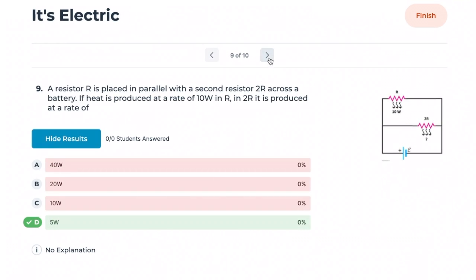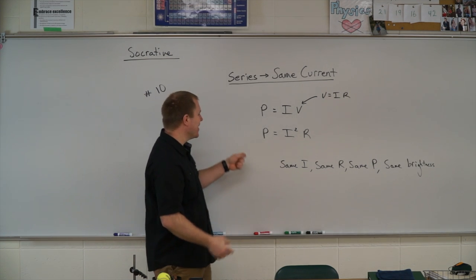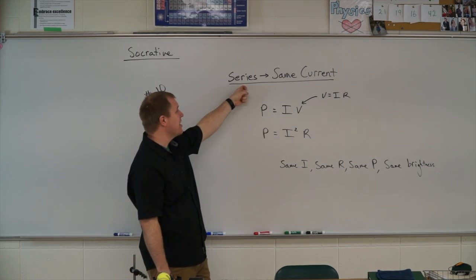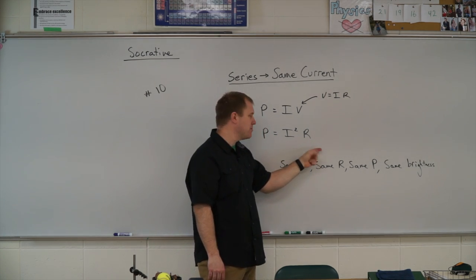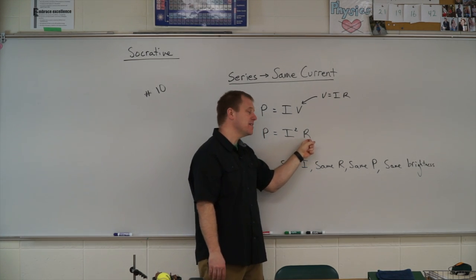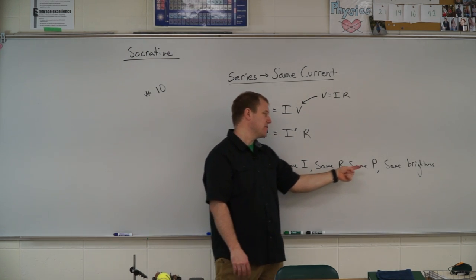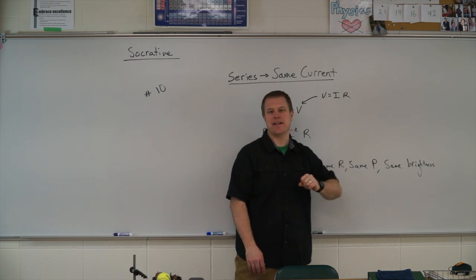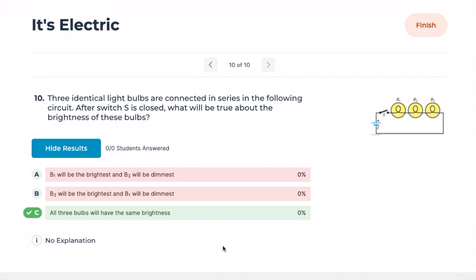Number ten: three identical light bulbs are connected in series. After switch S is closed, what is true about the brightness of the three bulbs? Since they are in series, they carry the same current. Using P = I²R, and since all three have identical resistance and identical current, they all have the same power and therefore the same brightness.